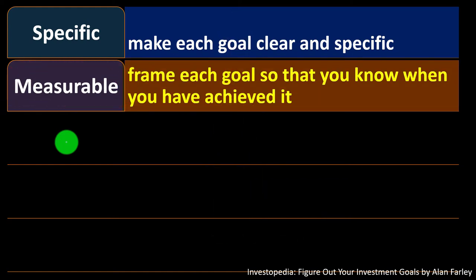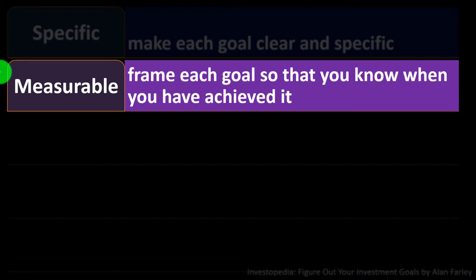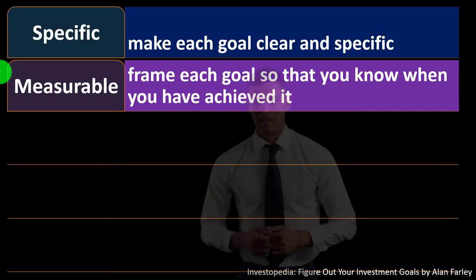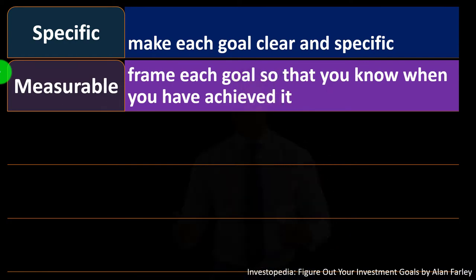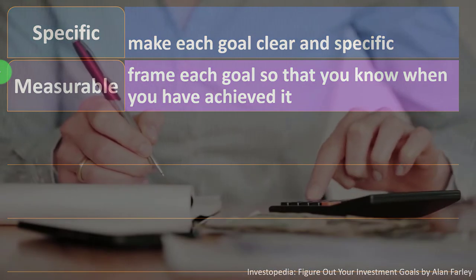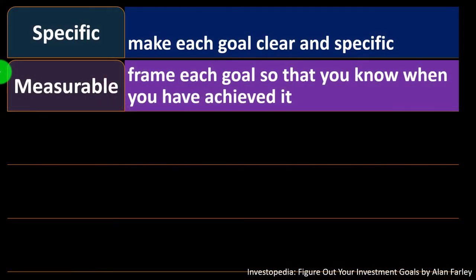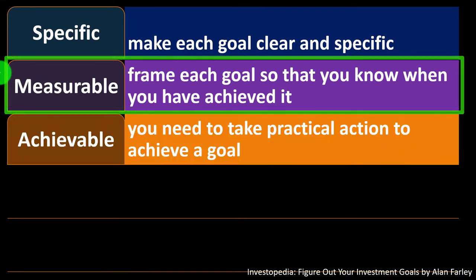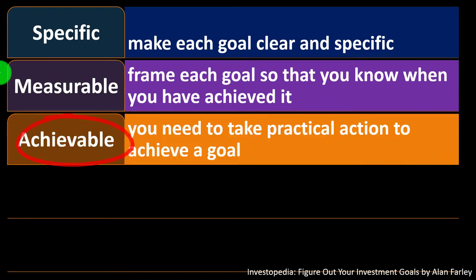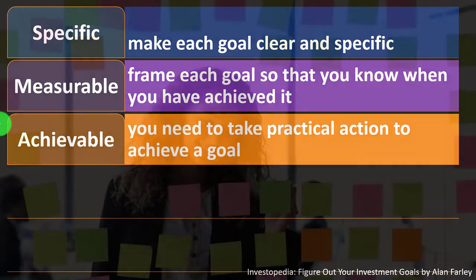Measurable means framing each goal so that you know when you have achieved it. We want not just to describe what we're aiming for, but to put actual numbers to it, with track records and milestones along the way. That makes it much easier to see what is going on and to track performance. Achievable means you need to take practical action to achieve a goal.